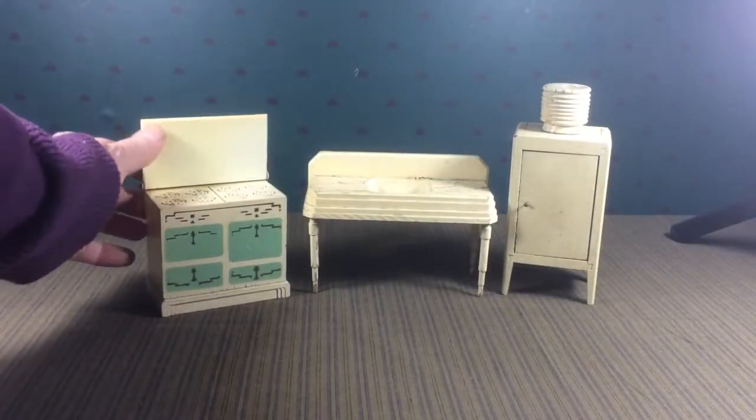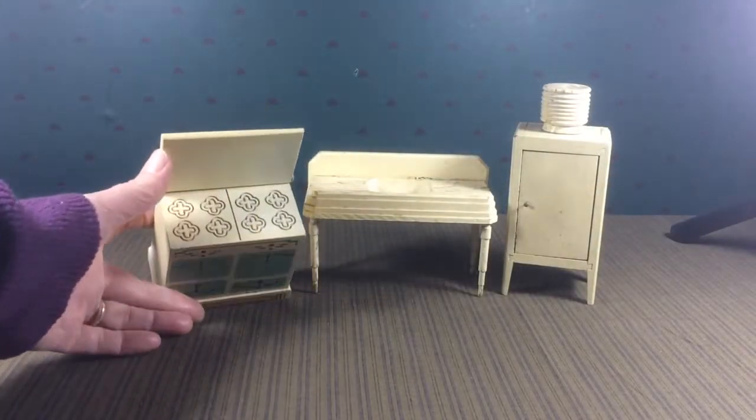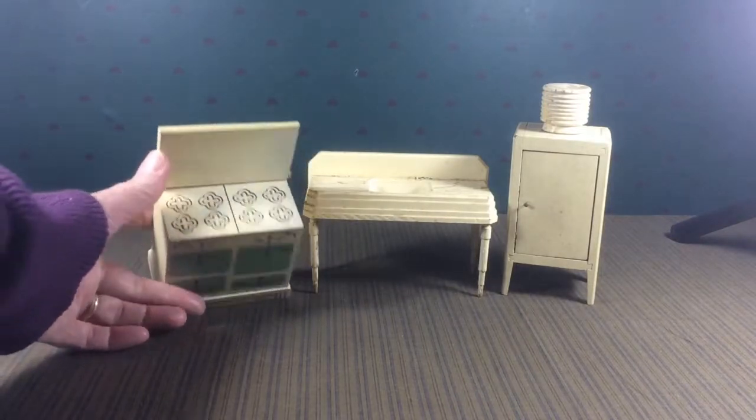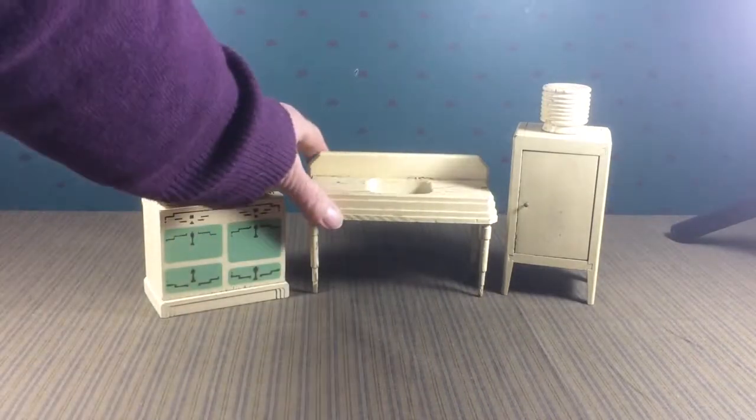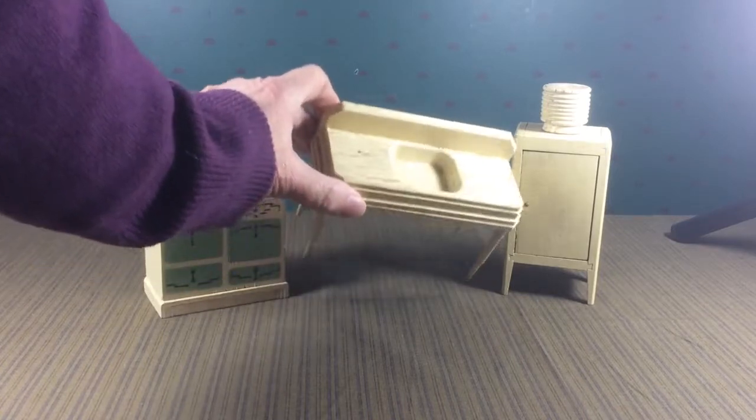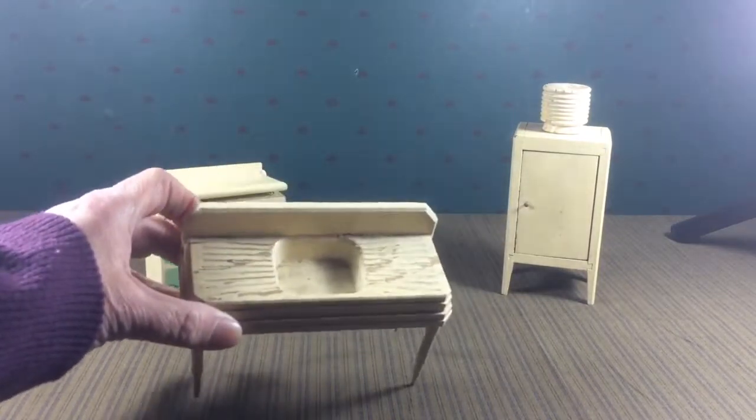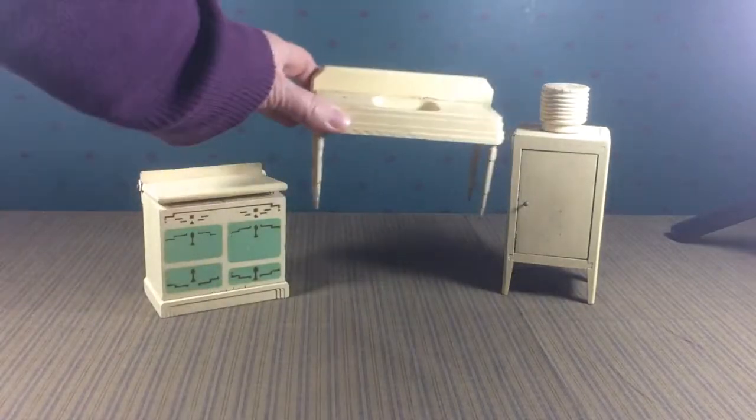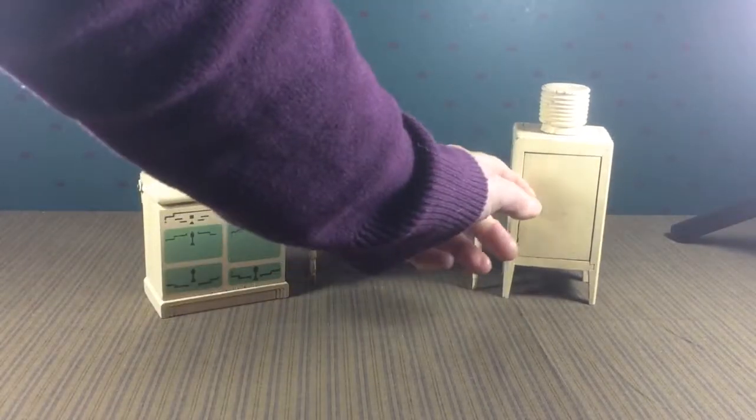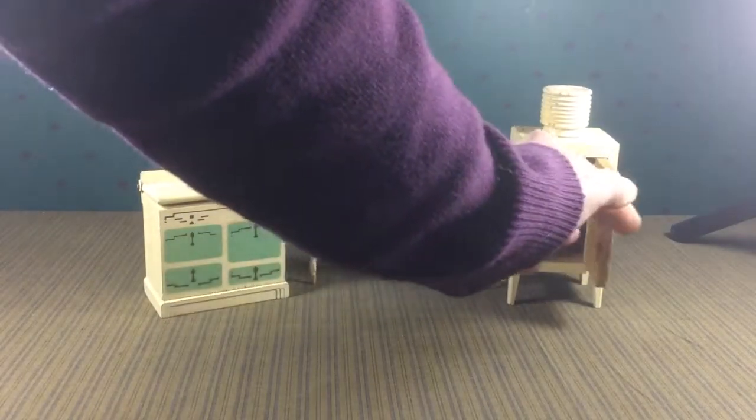Now this Strombecker set is from the 1930s also, I believe. This is a kitchen set with the stove and the old farmhouse-style sink. I would kill to have one of these in my kitchen. And the early style refrigerator that had the motor on top.